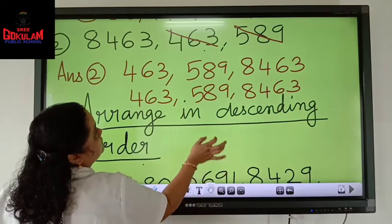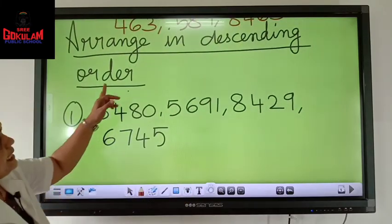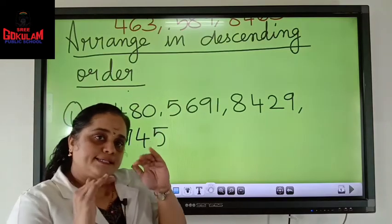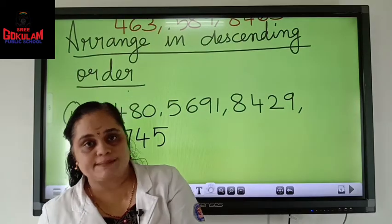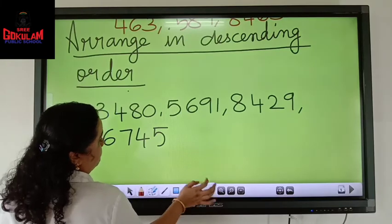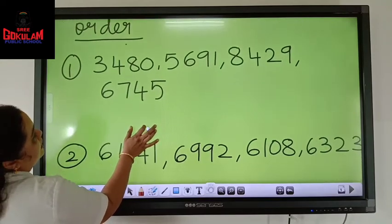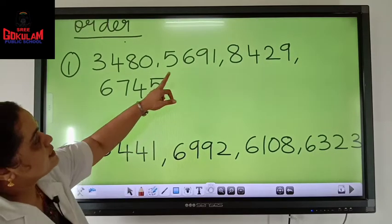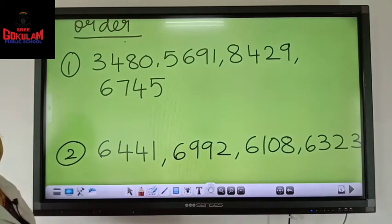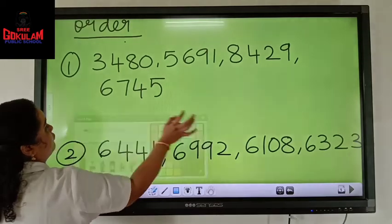Now what about arranging in descending order? Ascending order is small to big. Descending order is big to small, isn't it? Biggest to smallest. Let us see this group of numbers here. We will be arranging in descending order: 3480, 5691, 8429, and 6745. We can use both methods — whichever is easy for you.